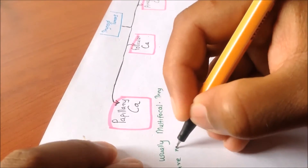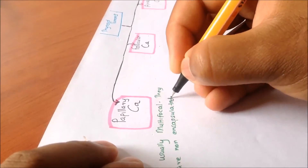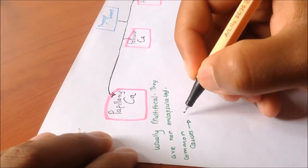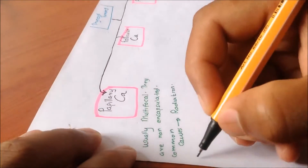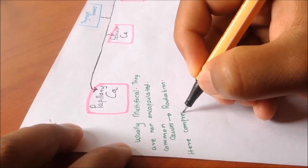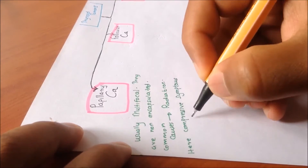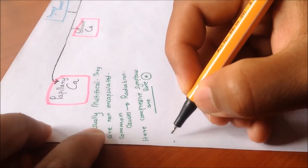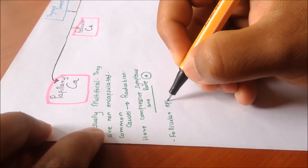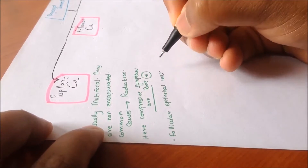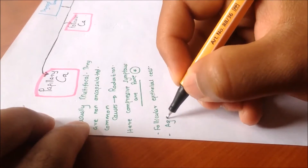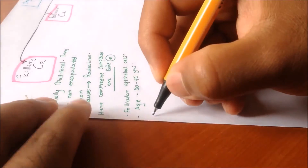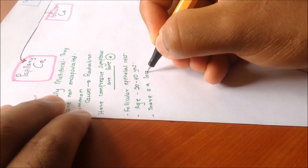Papillary carcinomas are usually multifocal and not encapsulated — they have no capsule. The most frequent cause is previous radiation. Patients normally do not present with compressive symptoms; they have no symptoms at the beginning. Papillary carcinomas are follicular epithelial cells in origin and are the most frequent thyroid carcinoma, accounting for around 60% of cases.